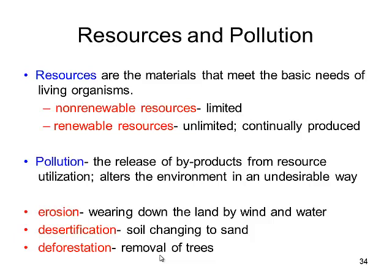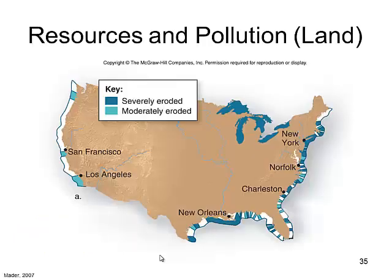Deforestation — removal of trees, removal of those big root systems — is an issue because it can increase erosion rate. Look at the coastline. Here in Maine we're doing okay with respect to erosion. A lot of it is rock, but also we haven't pulled all the trees out and developed that coastline as much.